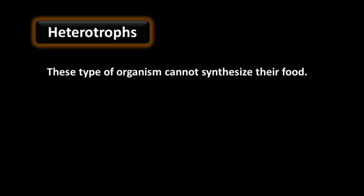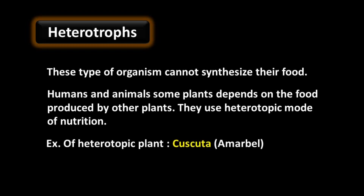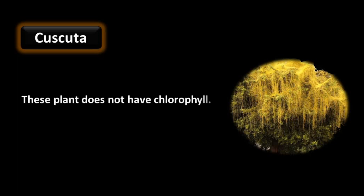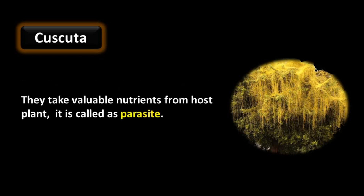Heterotrophs cannot synthesize their food. Humans, animals, and some plants depend on food produced by other plants and use heterotrophic nutrition. For example, Cuscuta — also called Amarbel — is a plant that grows on another plant. Cuscuta does not have chlorophyll, so it cannot synthesize food by photosynthesis. It takes ready-made food from the plant on which it is climbing, called the host plant. This makes Cuscuta a parasite, as it takes valuable nutrients from the host.